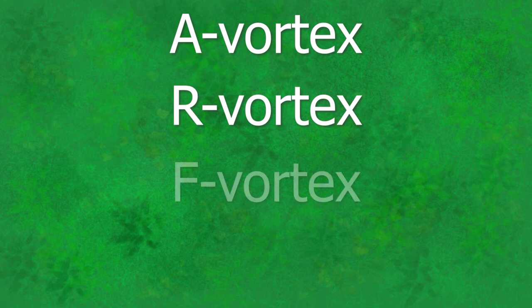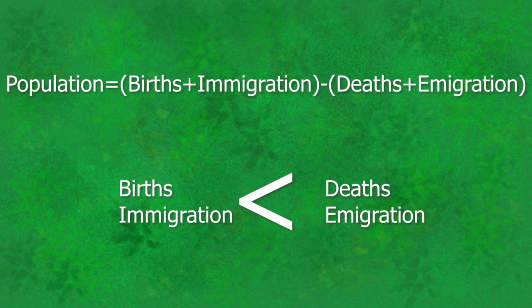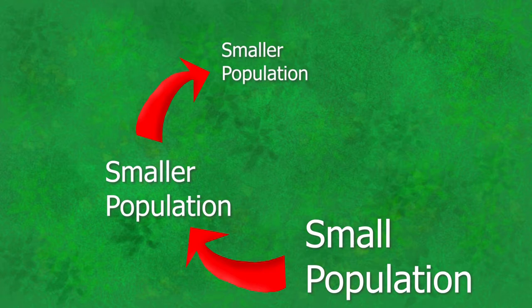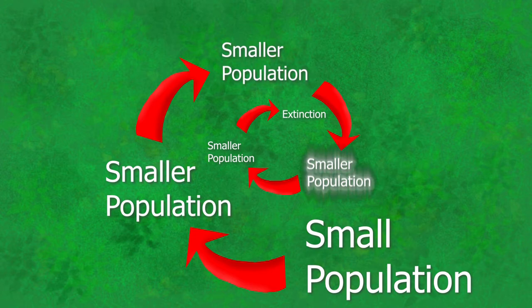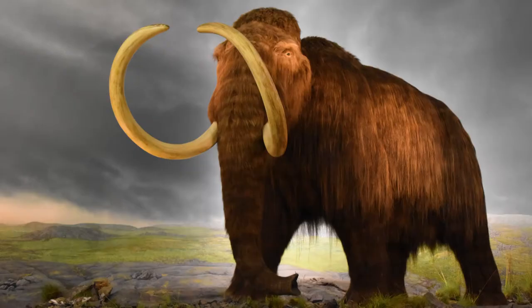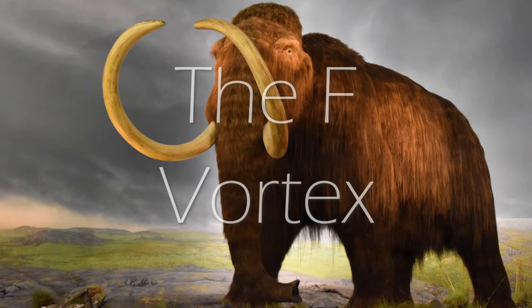There are four recognized vortices: the A vortex, the R vortex, the F vortex, and the D vortex. Basically, populations decline when the death or emigration rate is higher than the birth or immigration rate. What the extinction vortex shows is how the decline of a species becomes a positive feedback loop, where the effects of a declining population lead to the population becoming smaller and smaller and having less of a chance of recovering. The use of the term vortex or spiral comes from the idea that the feedback loop causes the population to decline more and more rapidly as it becomes smaller.